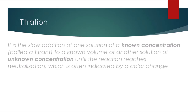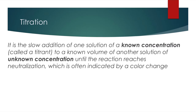What is titration? Titration is finding out the unknown concentration. The unknown concentration may be of an acid or a base. The definition of titration is: slow addition of one solution of unknown concentration to a known volume of another solution of known concentration until the reaction reaches neutralization. It is indicated by a color change.